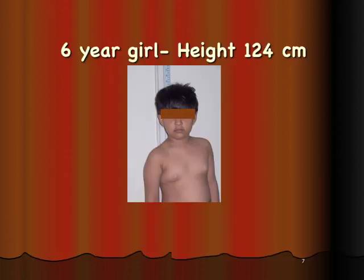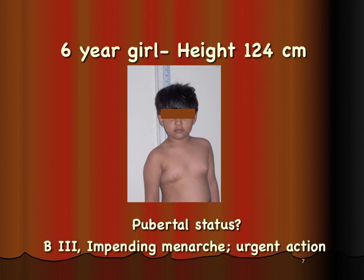Consider this 6-year-old girl whose height is 124 centimeters and whose breast development is quite significant — around breast stage 3 to 4 — with impending menarche, and therefore urgent action is required.